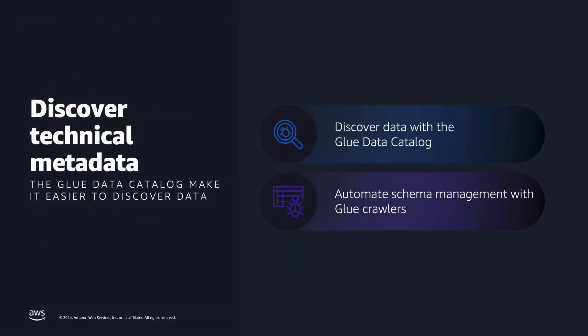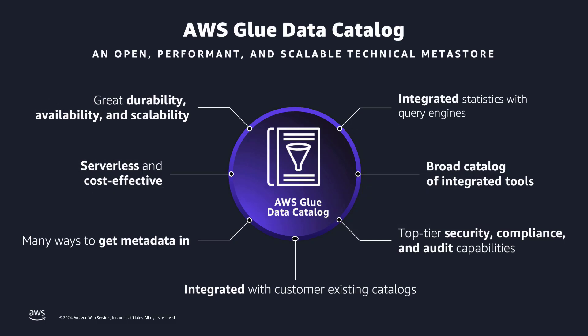Now let's start with technical users. For that, AWS offers the AWS Glue Data Catalog. The AWS Glue Data Catalog is a metadata store for data lakes. It has great durability, availability, and scalability. And it's serverless, cost-effective, and integrated with many AWS analytic services and also third-party vendor solutions.